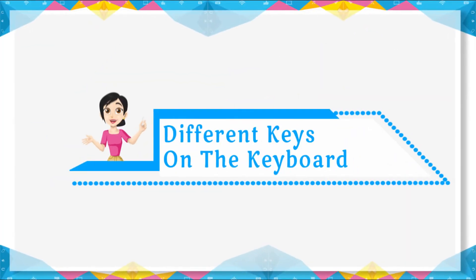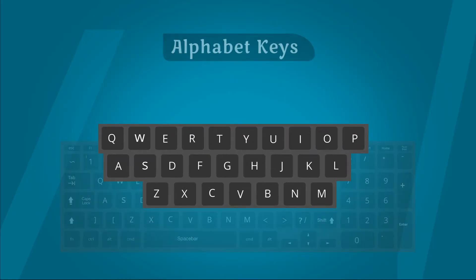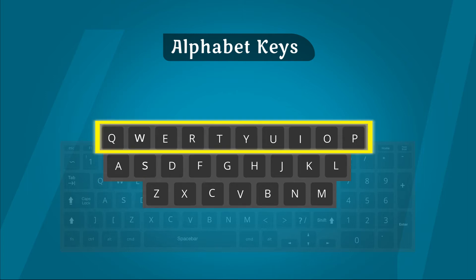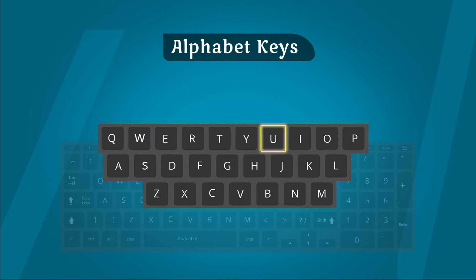Keyboard पर different keys — Alphabet keys: इसमें तीन rows में A से Z तक 26 letters होते हैं। First row: Q, W, E, R, T, Y, U, I, O, P — ten letters.